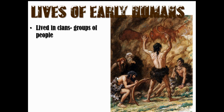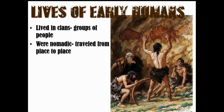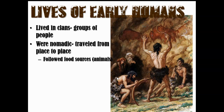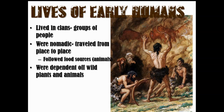Everyday life was quite different back then. Early humans lived in clans or groups — not just your immediate family but your entire extended family: uncle, aunt, grandma, second cousin, everyone together. They were nomadic, traveling from place to place. They knew not to stay in one place because they had to follow animals for food.